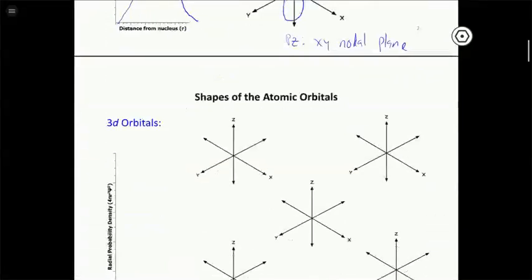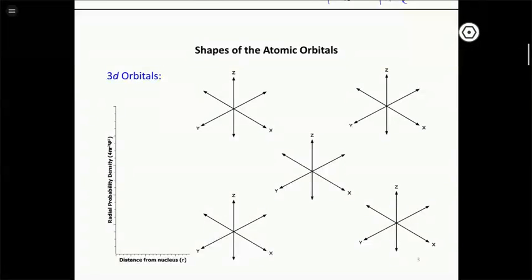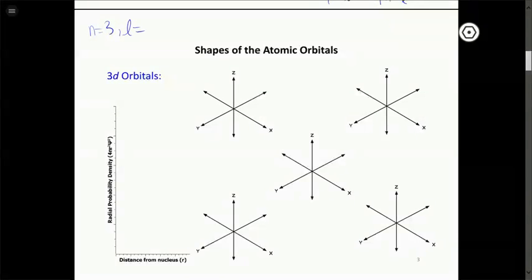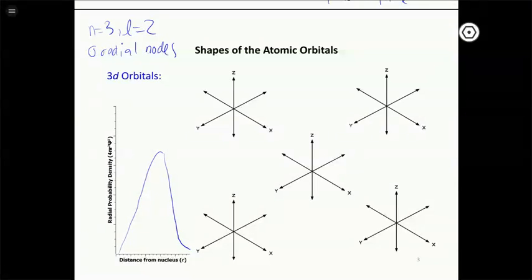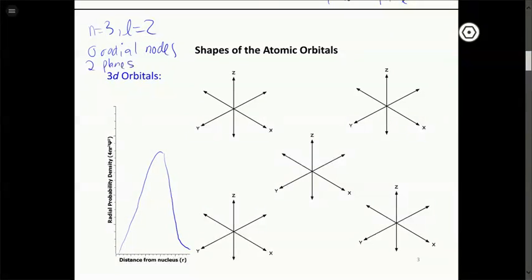Let's move on to d orbitals, which have the most complicated shapes you'll need to know. For 3d orbitals, n equals 3 and l equals 2. The number of radial nodes is n minus l minus 1, which gives zero radial nodes. The part that defines the shape is the number of nodal planes — because l equals 2, we have two nodal planes that bisect the orbital, with the phase changing on either side of those planes.